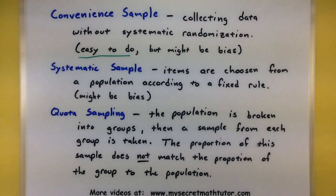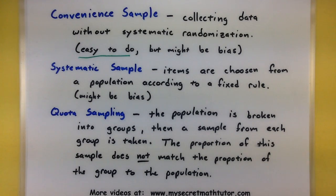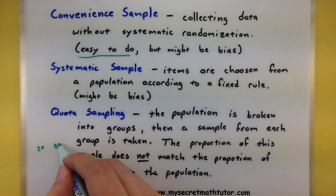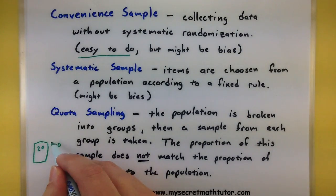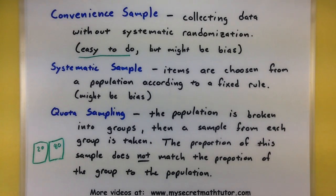And then there's quota sampling. This one is very similar to stratified sampling, but watch the difference. In quota sampling, the population is broken into groups, and then a sample from each group is taken. The difference is that the proportion of this sample does not match the proportion of the group to the population. So if we go back to the example of breaking down 100 objects into 20 and 80, with quota sampling, maybe we'll take five from this group and five from this group — even though those groups are a different size, we take the same number from each.